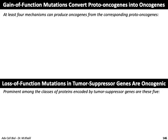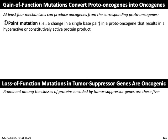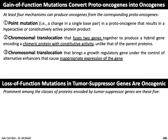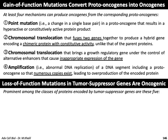At least four mechanisms can produce oncogenes from proto-oncogenes: point mutation, chromosomal translocation (which can lead to chimeric proteins that are constantly hyperactive, causing maximum cell cycle progression), a second type of chromosomal translocation causing inappropriate overexpression of a gene, and amplification — abnormal DNA replication of a segment including a proto-oncogene, producing numerous copies of the gene and overproduction of the encoded protein. Point mutations can also lead to constantly active protein products.